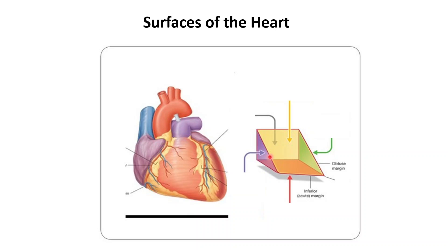Anatomists like to compare the heart to a tipped-over pyramid. A pyramid has five surfaces and one apex — and we've already talked about five surfaces and can see the apex of the heart in the same way.